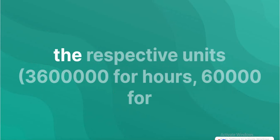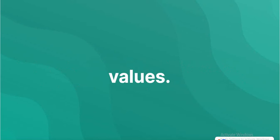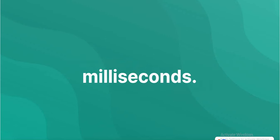Dividing the total milliseconds by the respective units for hours, 60,000 for minutes, 1,000 for seconds, to obtain the corresponding values. The remainder can then be used to calculate milliseconds.